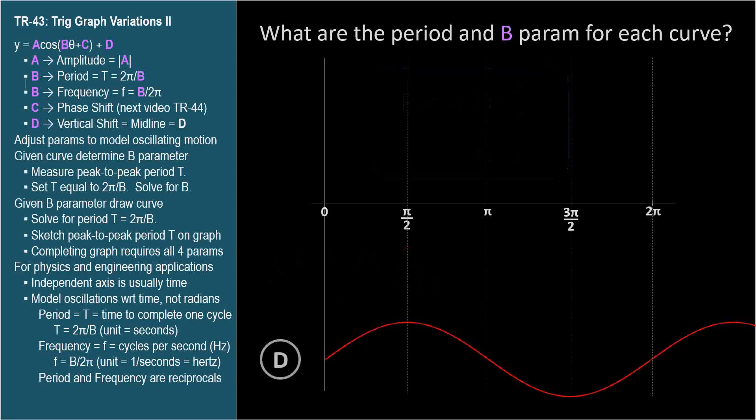For curve d, we don't have a convenient peak to peak or trough to trough measurement. But we can carefully consider these corresponding points and see that the period is 2 pi. Setting this equal to 2 pi over b yields a b parameter of 1. This makes sense. When the b parameter is 1, we're not compressing or stretching the trig function. So its period is the unadjusted 2 pi. When the period is 2 pi, the b parameter is 1.